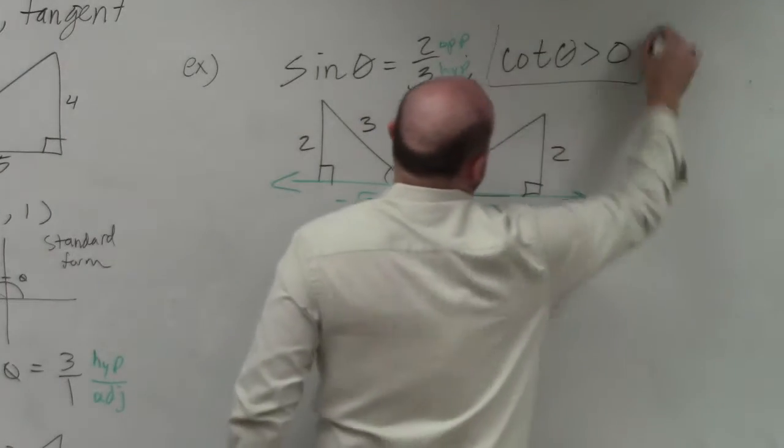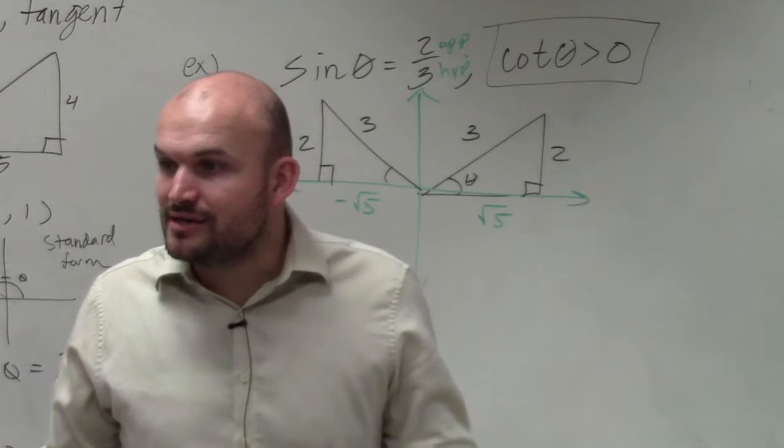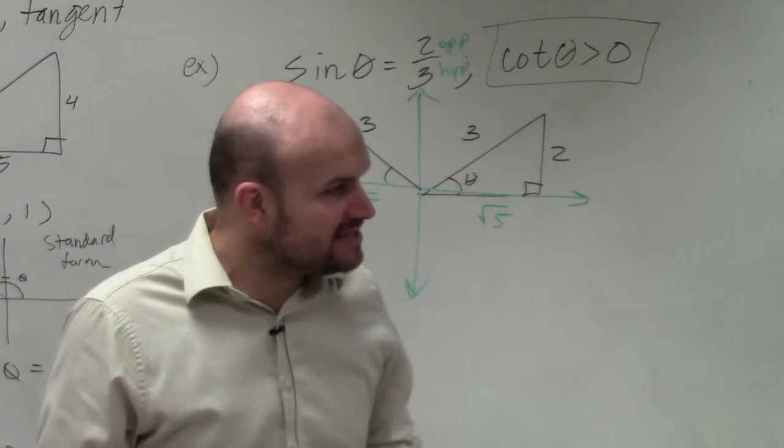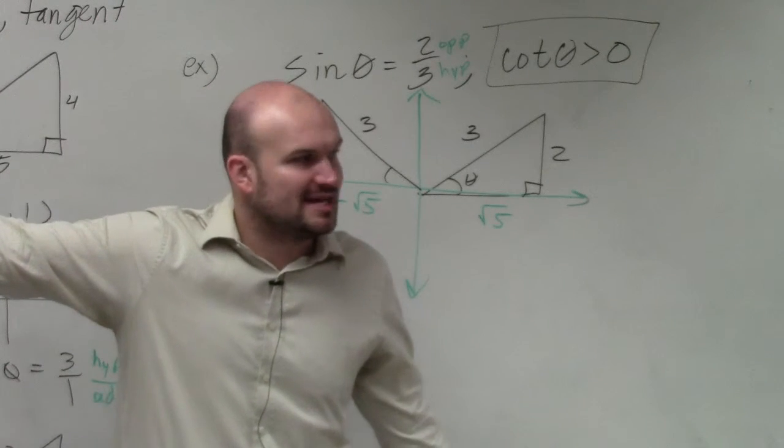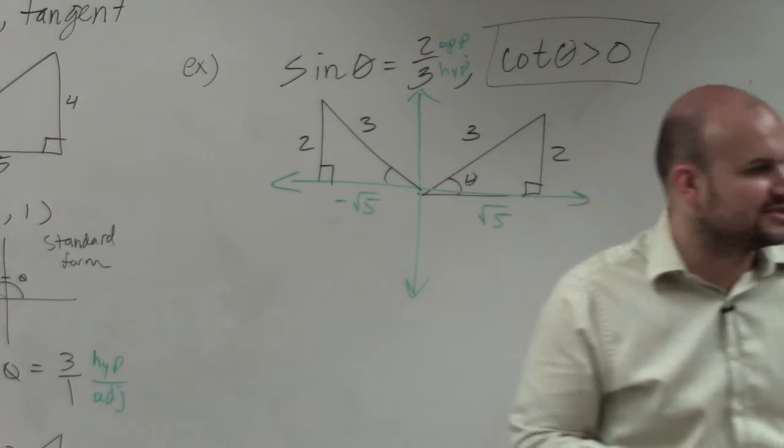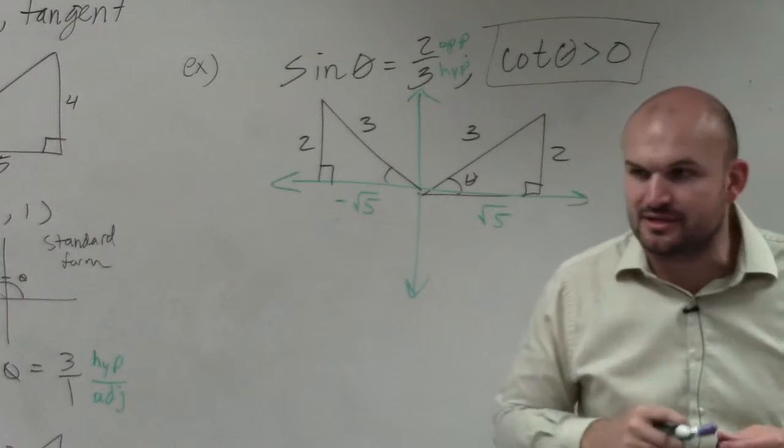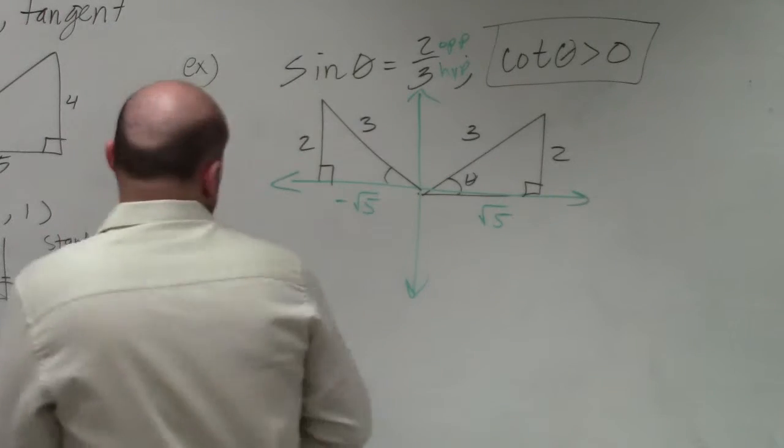Well, they gave us this constraint. Cotangent is greater than 0. That means cotangent is positive. Now, I gave you guys only the three trigonometric functions. The reciprocal is the exact same thing. Which quadrants is the cotangent going to be positive? It's the same thing as tangent. The third and the first.